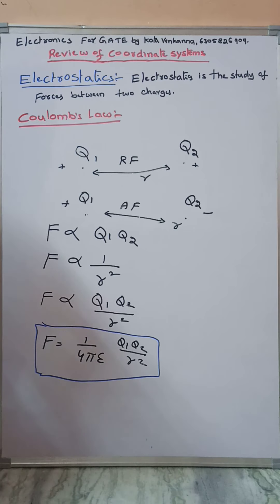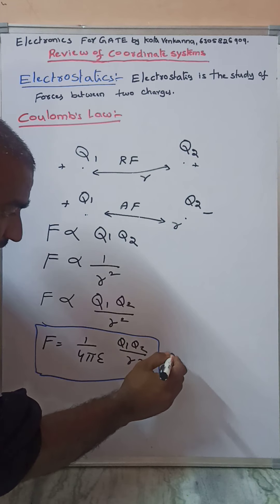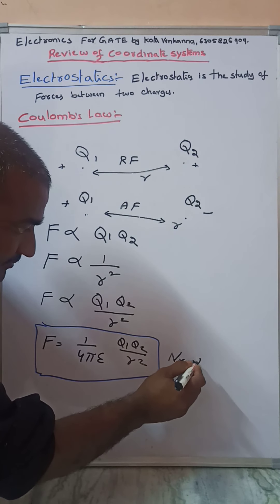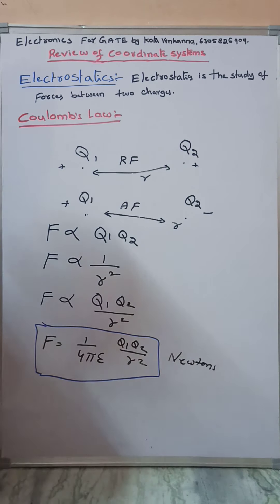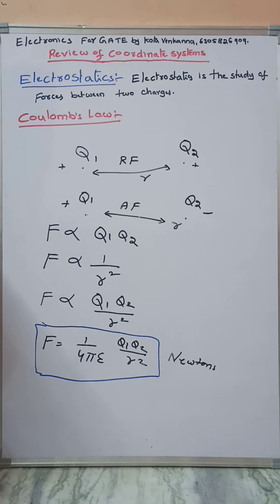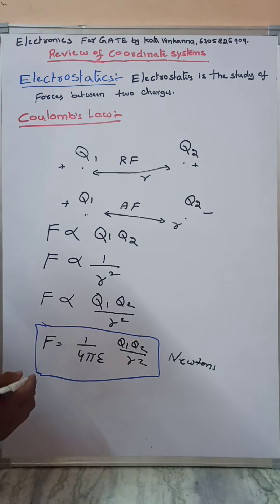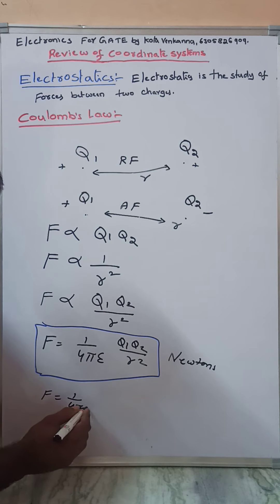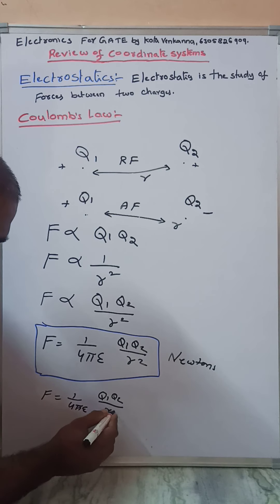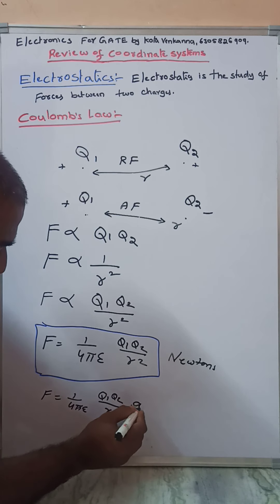The unit of force is Newtons. Since force is a vector quantity, it is indicated with AR. Therefore, F equals 1 over 4 pi epsilon times Q1 Q2 divided by R squared, multiplied by AR.